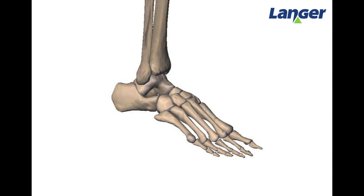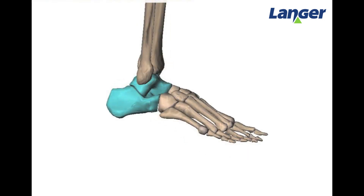The tarsals are made up of seven individual bones which are categorised between a proximal and distal group. The proximal row consists of the calcaneus and the talus.